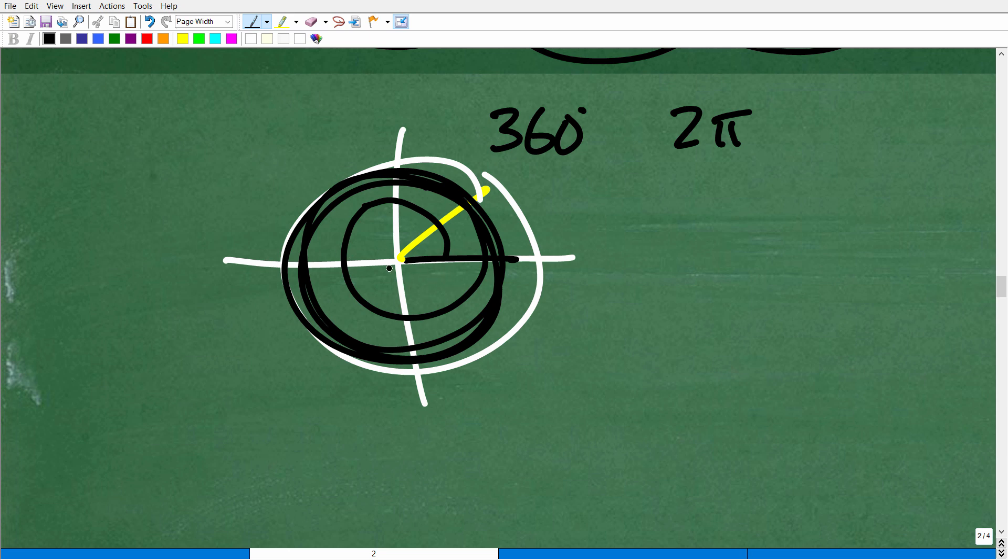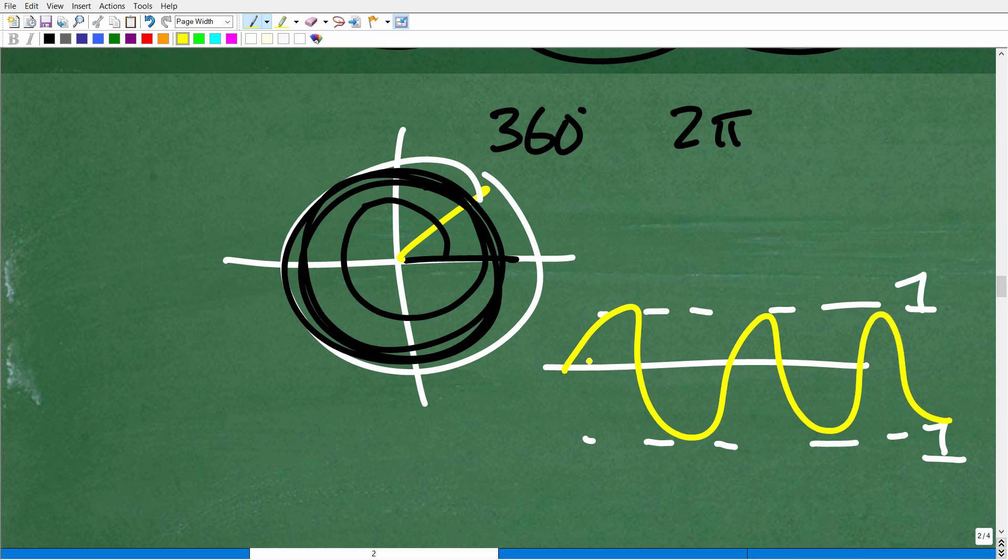This is why we call trigonometric functions periodic functions, because if you look at the graph of, like, let's say sine and cosine, the values are bouncing between 1 and negative 1. Tangent is a different deal, but you have these values that are bouncing around for these various angles. So you have what we call periodic functions because they're kind of repeating over and over again.